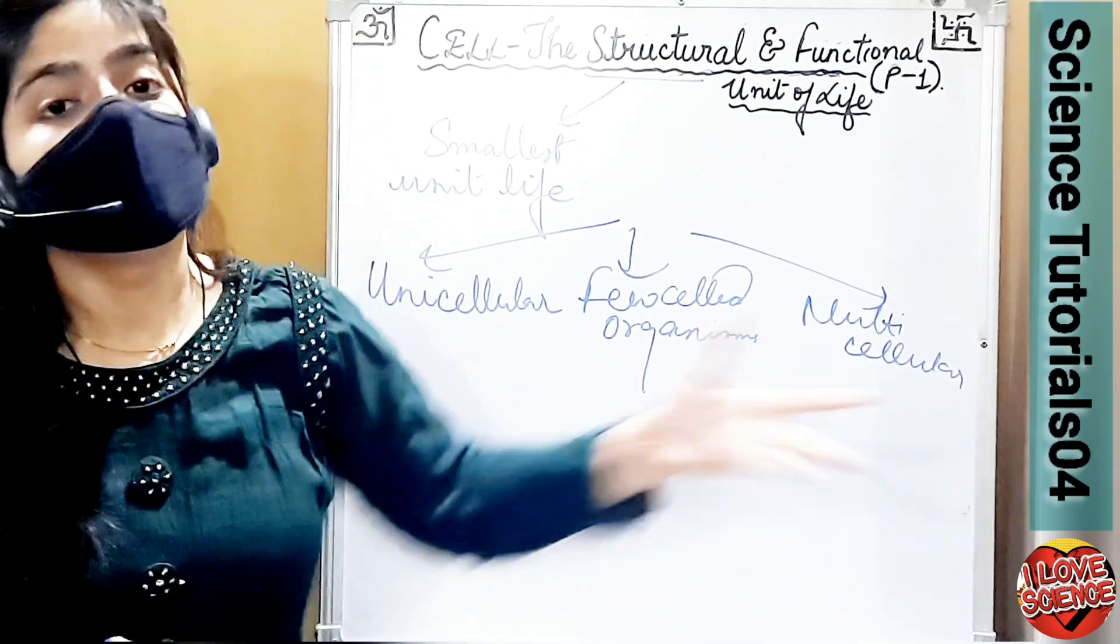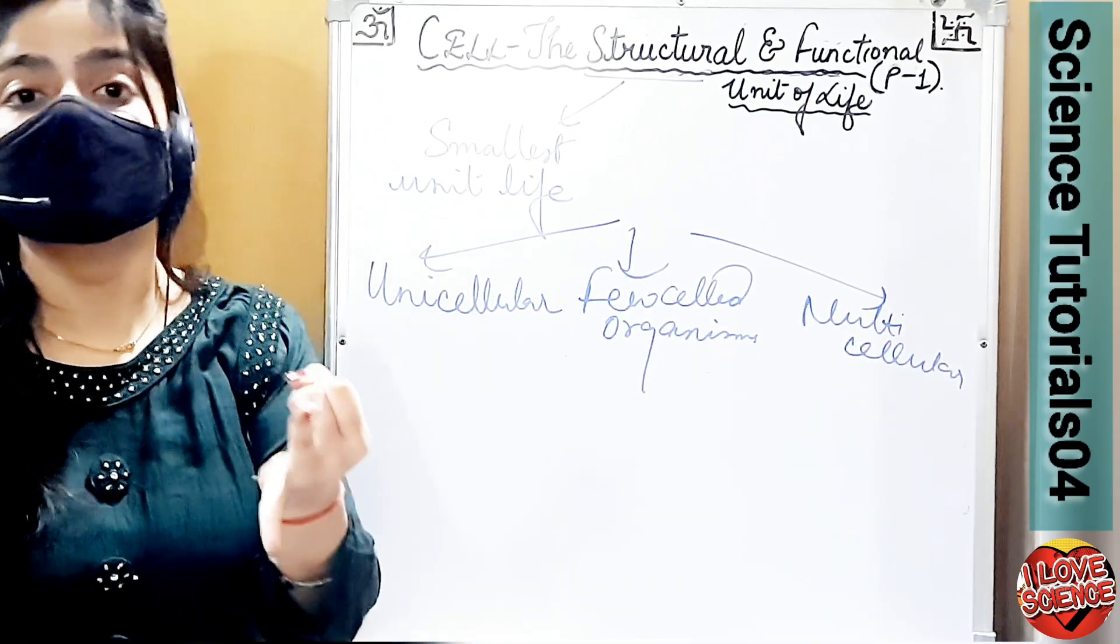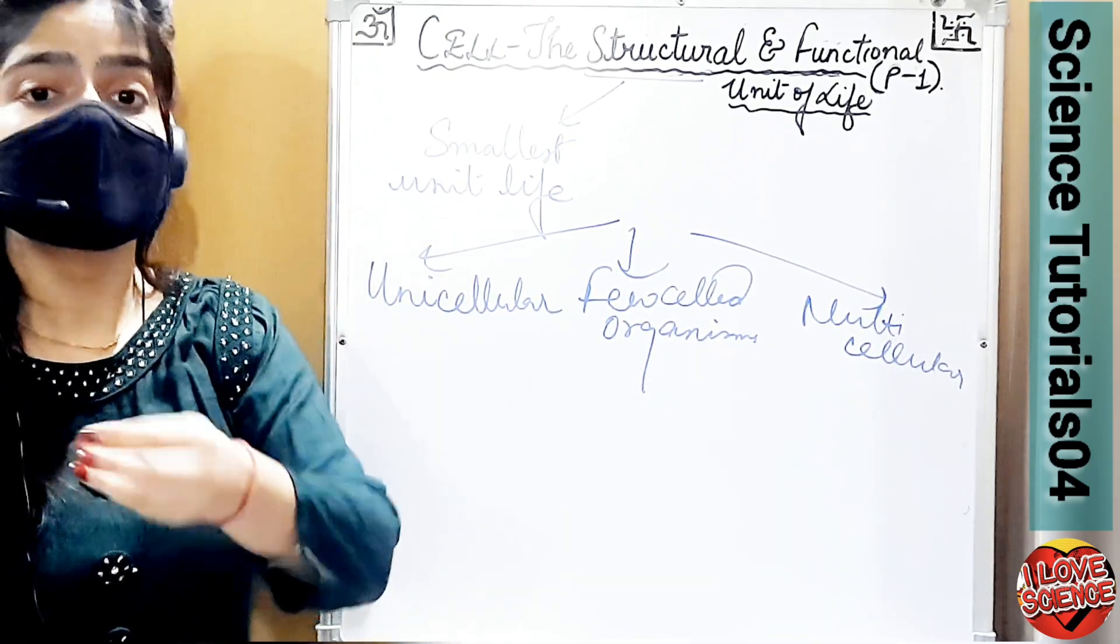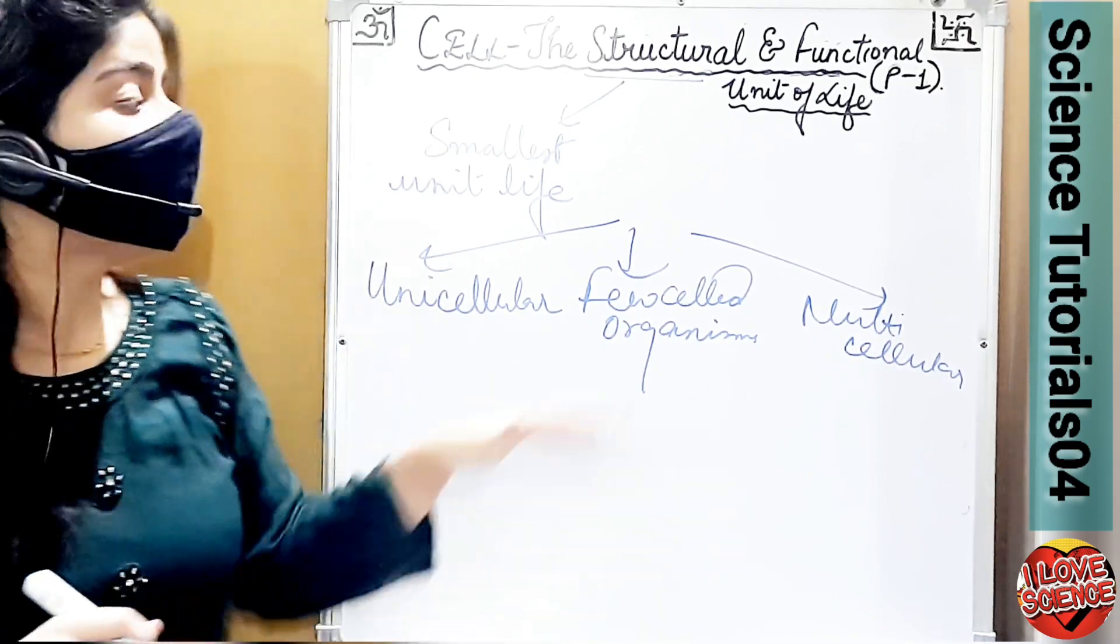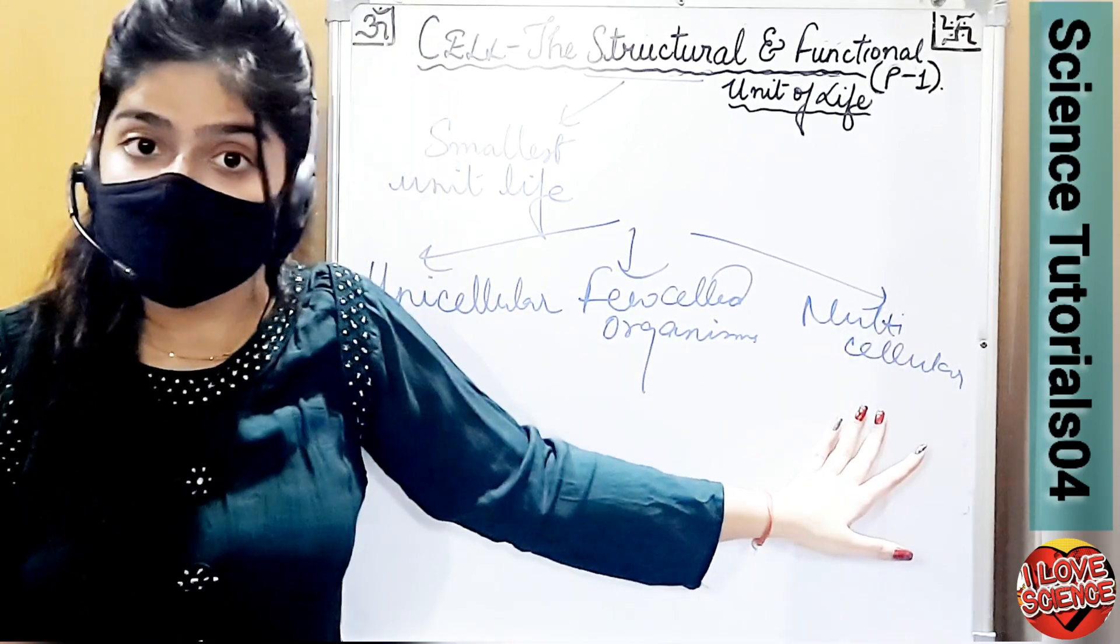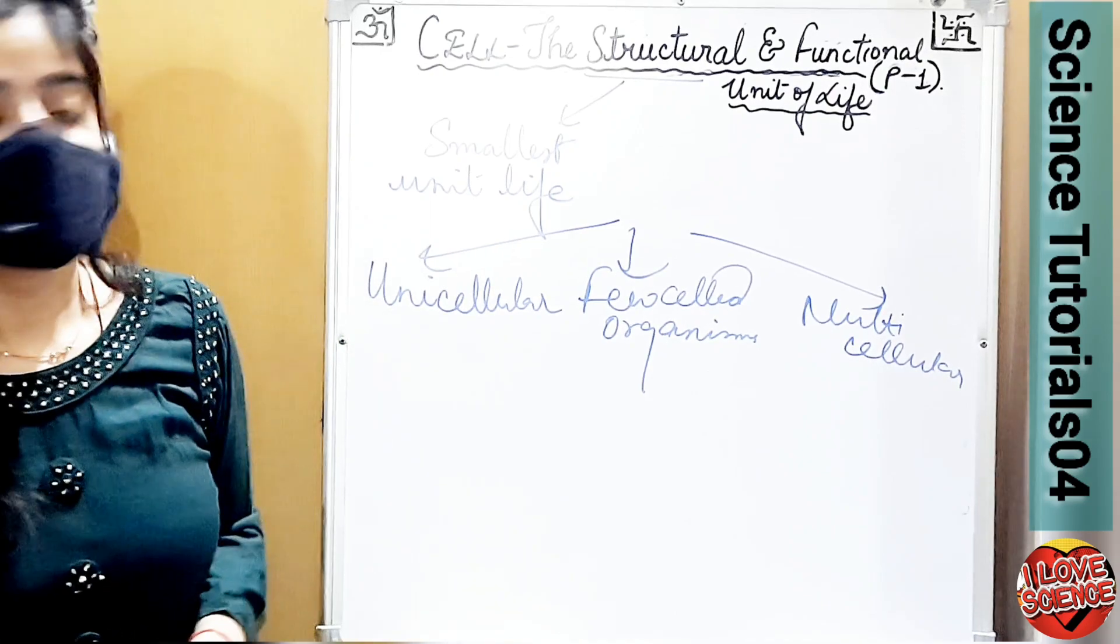And in multicellular, we know human beings, plants, fruits, and animals, which are complex organisms, come under multicellular organisms. One more thing in this video we will learn about cells.